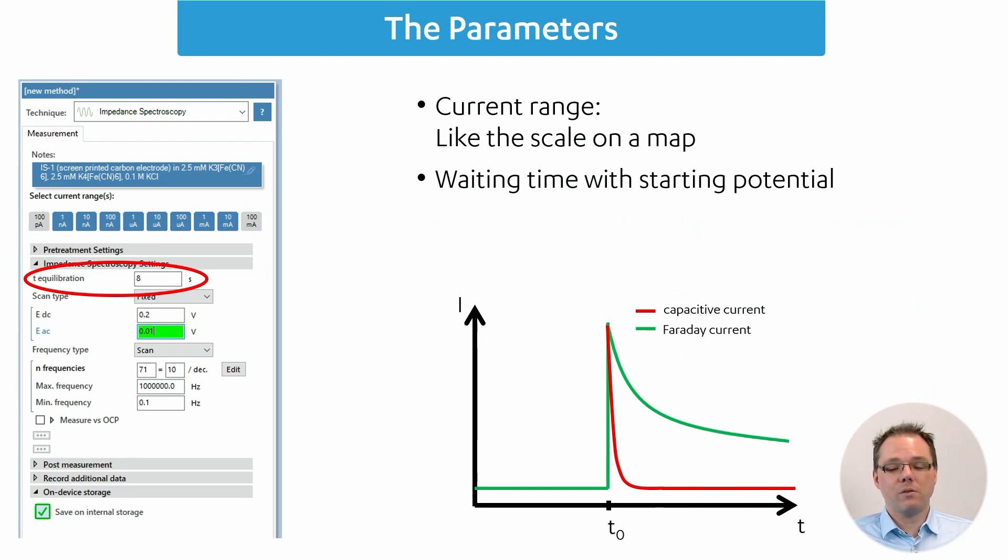The next point is your equilibration time. This has two purposes. One is that you apply your starting potential, and in case that starting potential is different than the OCP of the electrode, you give the system some time for a capacitive charging current to decay. But it also gives the potentiostat time to choose the right current range.